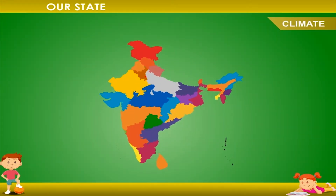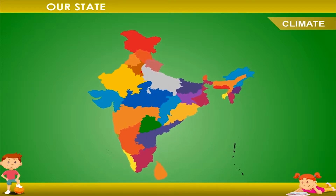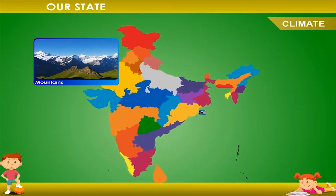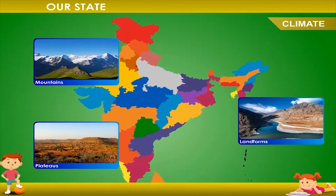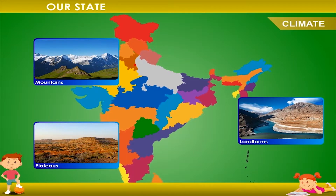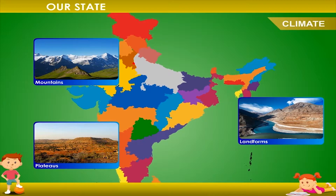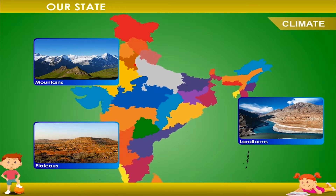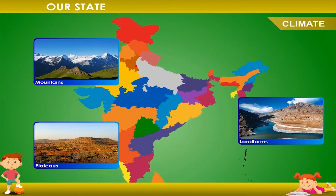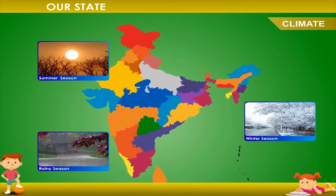Climate: India is a big country with varied landforms — some areas have mountains, some are plains, and some are plateaus. Some parts of India are very cold and some parts are very hot. One thing common throughout the country is the cycle of seasons. The whole country has three main seasons: the summer season, the rainy season, and the winter season.